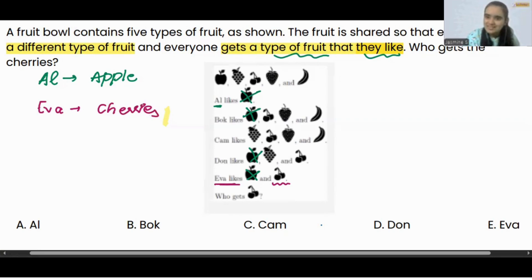What was our question? Our question was who gets cherries? That's it - Eva is going to get cherries. So easy problem, right?